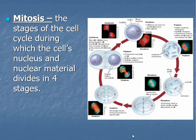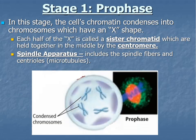In class, we usually go through these and draw color-coded diagrams in the notes. I would like you to have the simplified diagram here in your notes. Stage one is prophase. During this stage, the chromatin condenses into the chromosomes, which have that X shape. Each half of the X is what we call a sister chromatid, held in the center by a little circle called the centromere. The spindle apparatus, which includes spindle fibers and centrioles, will start to take shape during this phase.